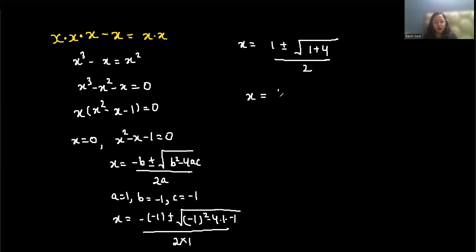So x = (1 ± √5) / 2. The solutions are x = 0, x = (1 + √5) / 2, and x = (1 - √5) / 2.